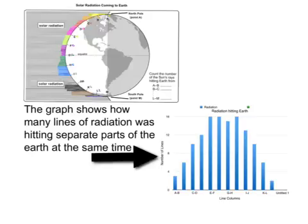The graph shows how many lines of radiation was hitting separate parts of the earth at the same time.